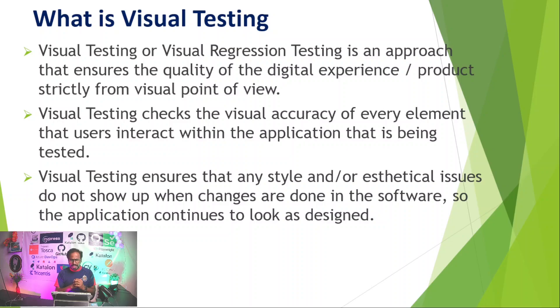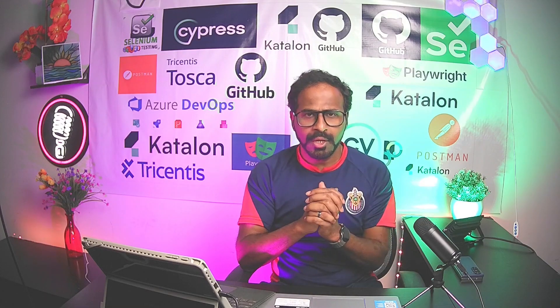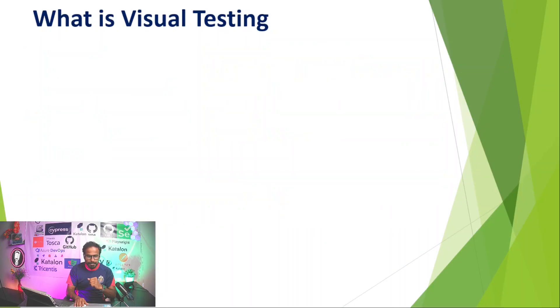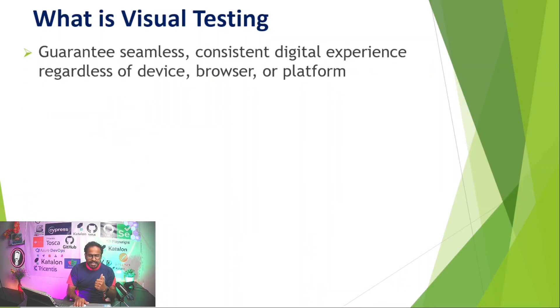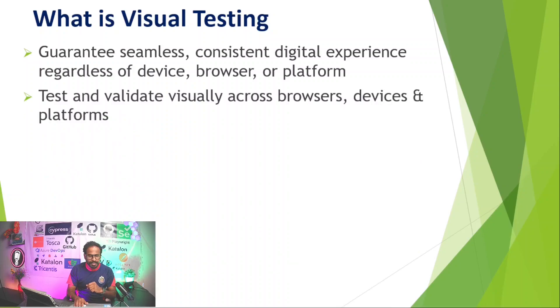All these kinds of bugs can be easily identified using visual testing with Katalon. The team can quickly identify defects, and developers can fix them immediately, ensuring the website looks as designed regardless of software updates. Visual testing also guarantees a seamless, consistent digital experience regardless of device, browser, or platform.